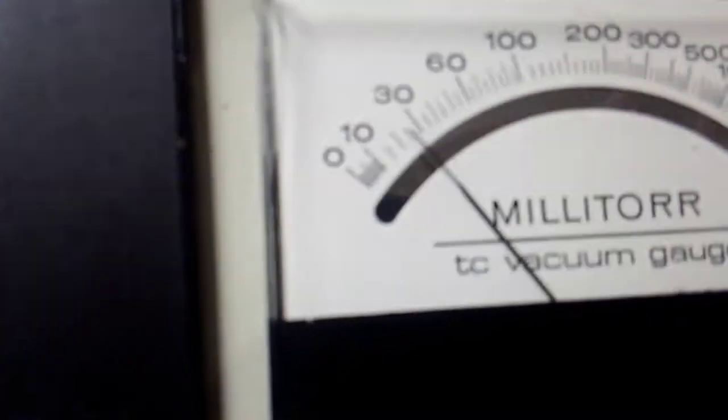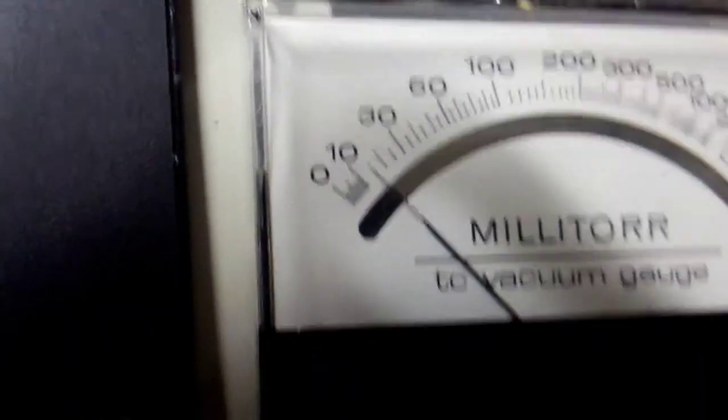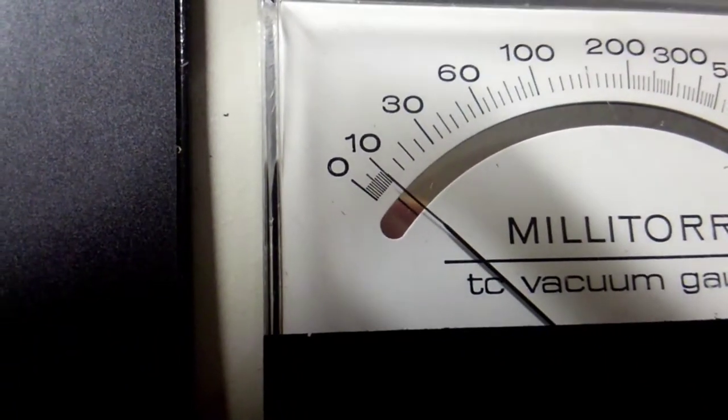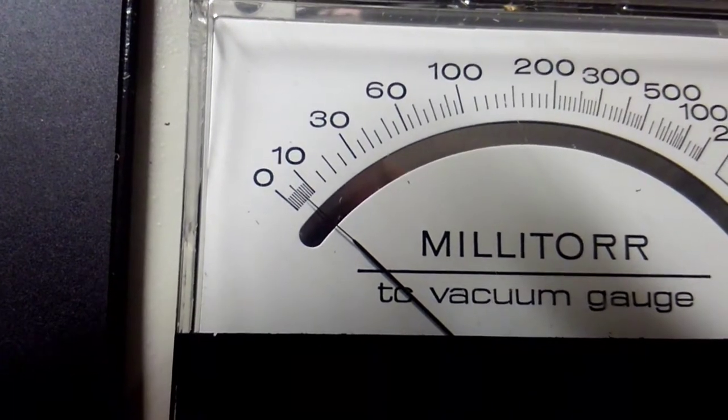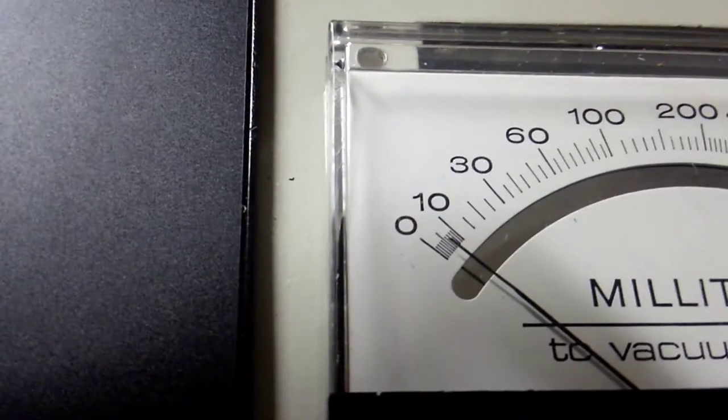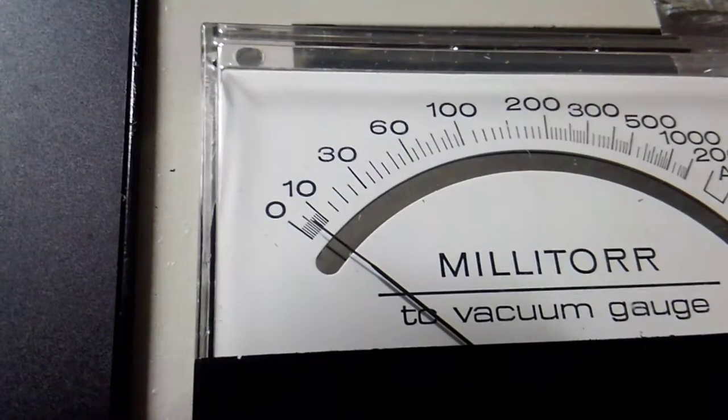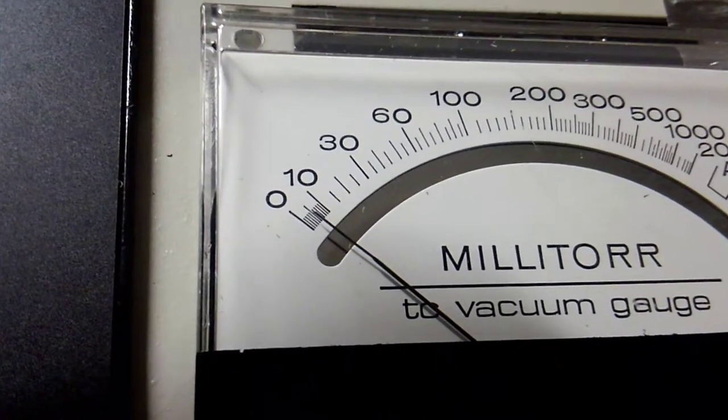You see the gauge is rapidly pumping down, and if I let it go for about five minutes I'll have high vacuum, which will be just barely over zero units on this gauge. One point zero units would be one times ten to the minus three torr, or one millitorr, and something less than that would be high vacuum.